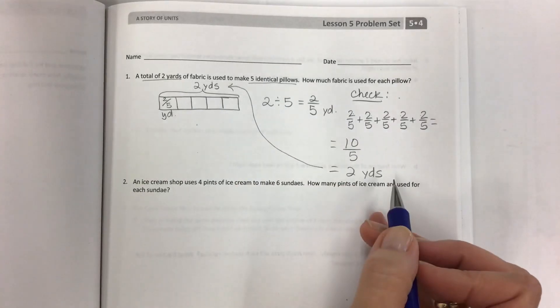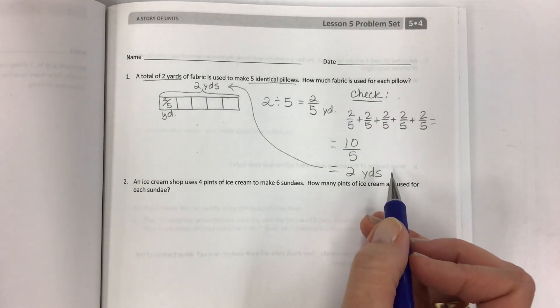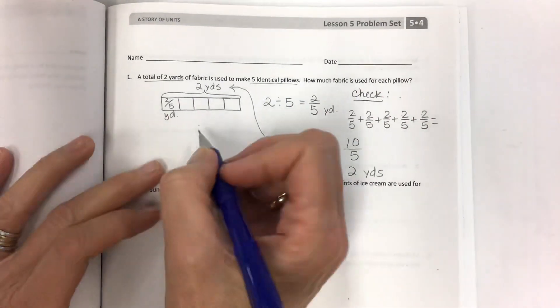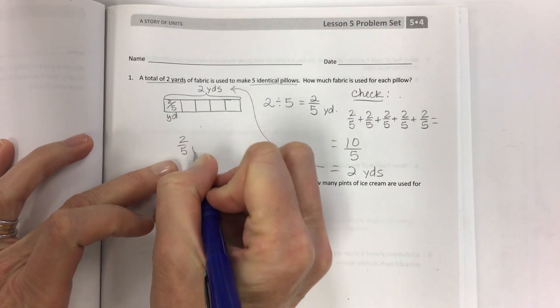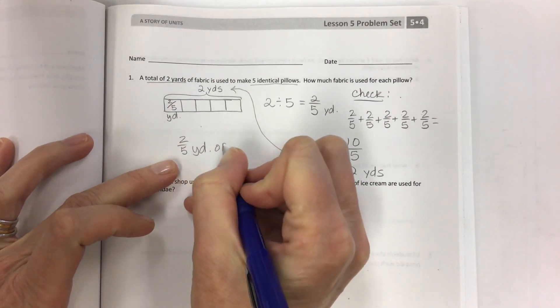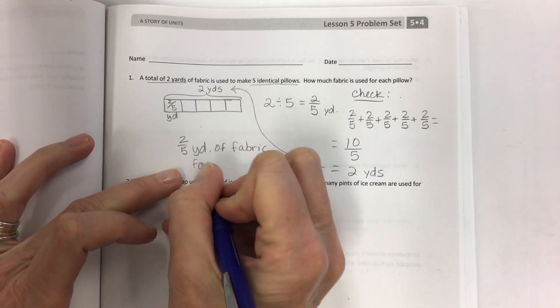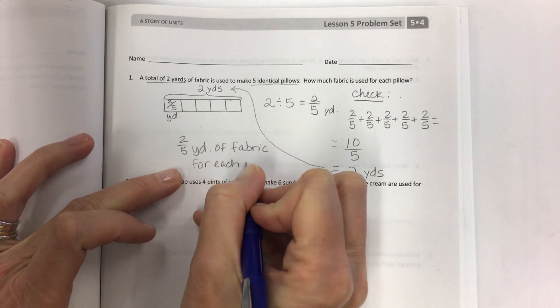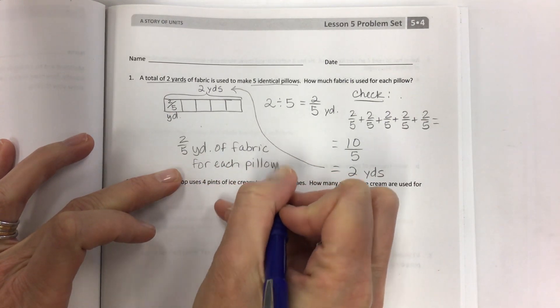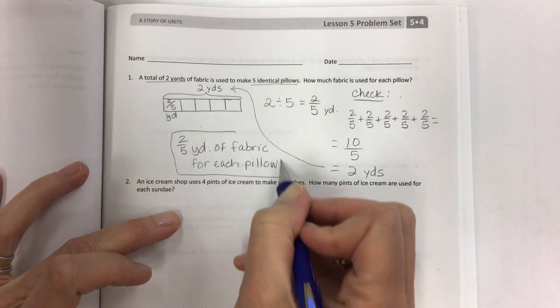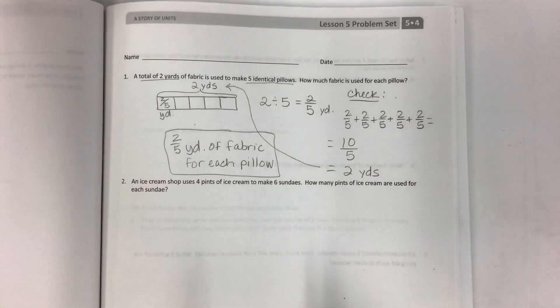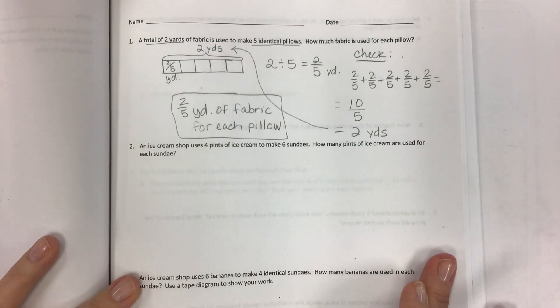I've split it apart and then I can put it back together. That's what we're doing today is taking things apart and putting them back together and then we're going to label it correctly. Two-fifths yard of fabric for each pillow. Take the time to label everything. It's really critical that you understand what it is that you're finding and how to label it properly.